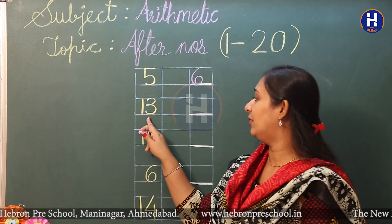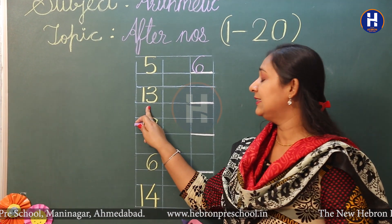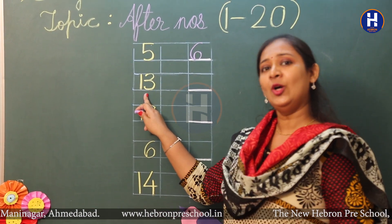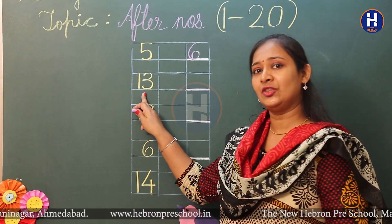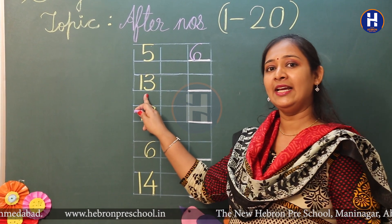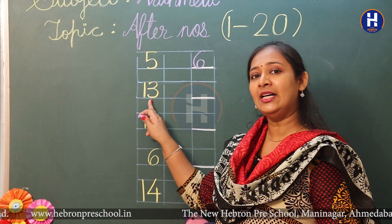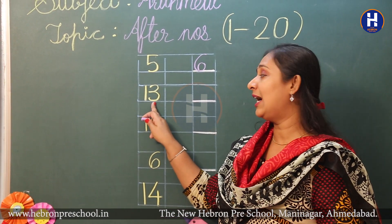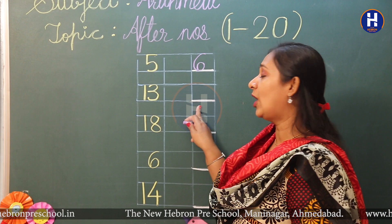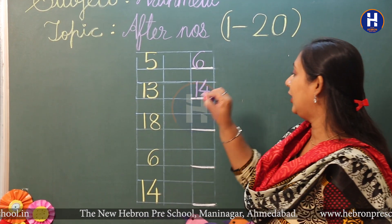Let's go to the next number — ab doosre number pe jate hain. This is number thirteen — yeh number thirteen hai. So let's do forward counting: eleven, twelve, thirteen. Thirteen ke baad the next number is fourteen. So the after number is fourteen.